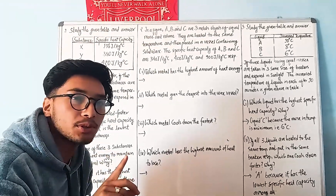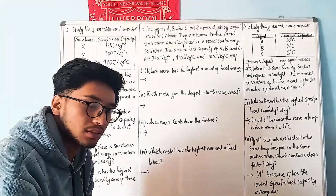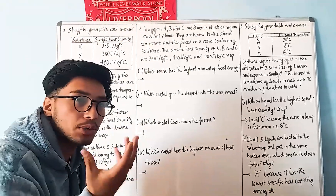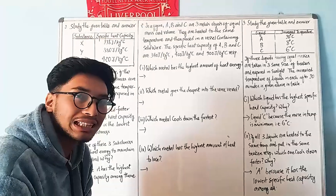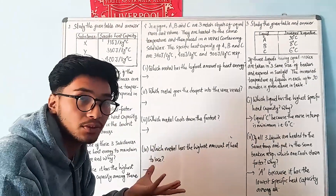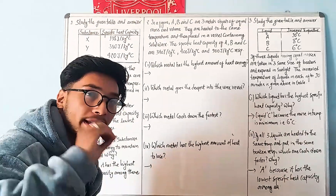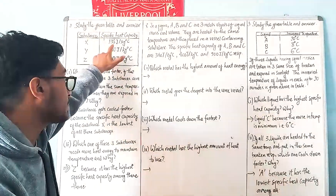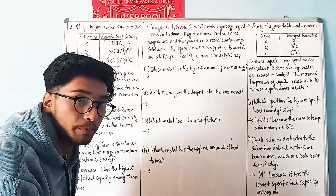Water is very specific — its specific heat capacity is 4200 J/kg°C. Because water has such a high specific heat capacity, it takes more time to heat up and more time to cool down. If specific heat capacity is large, more time is needed to change its temperature.